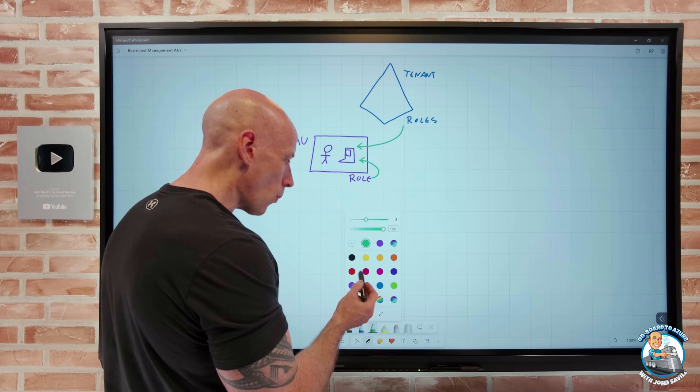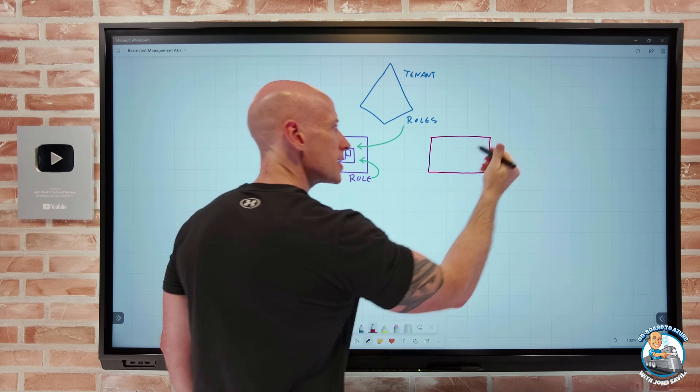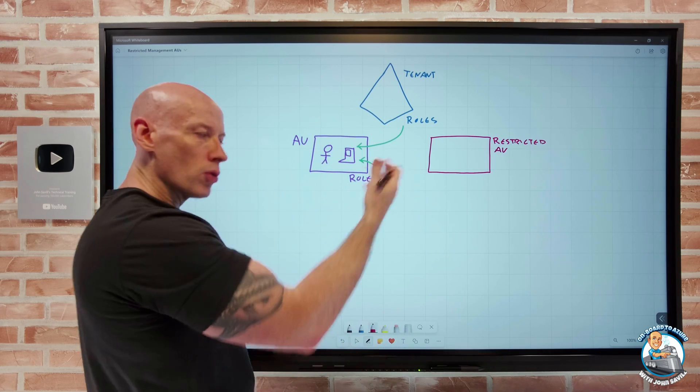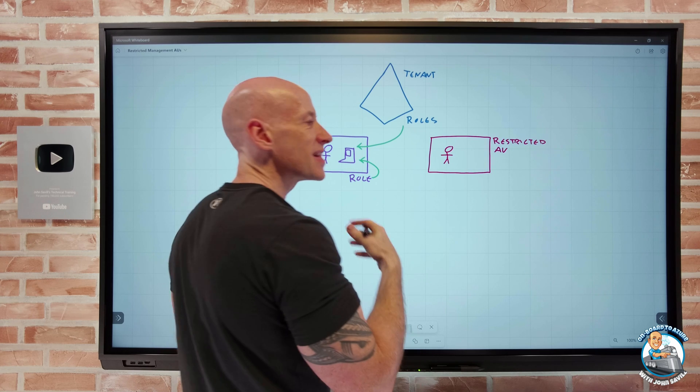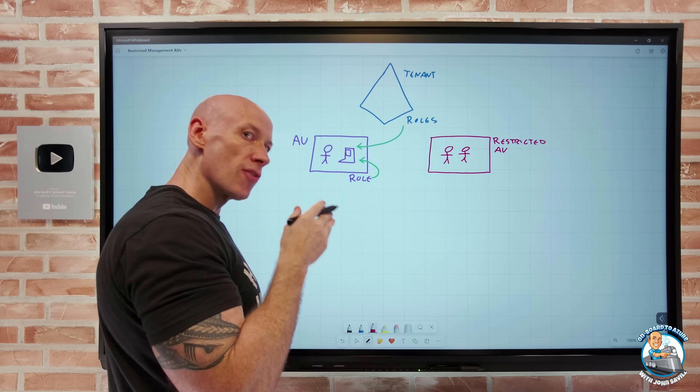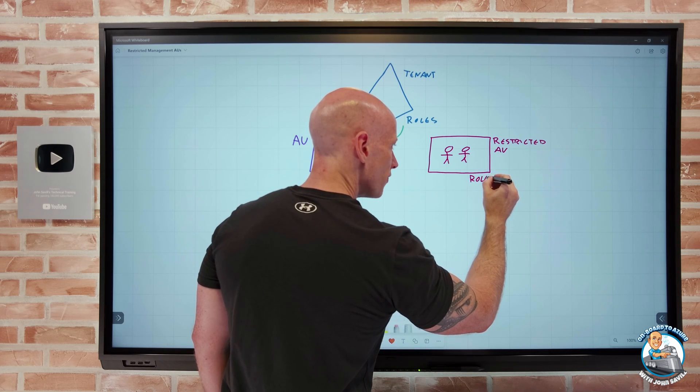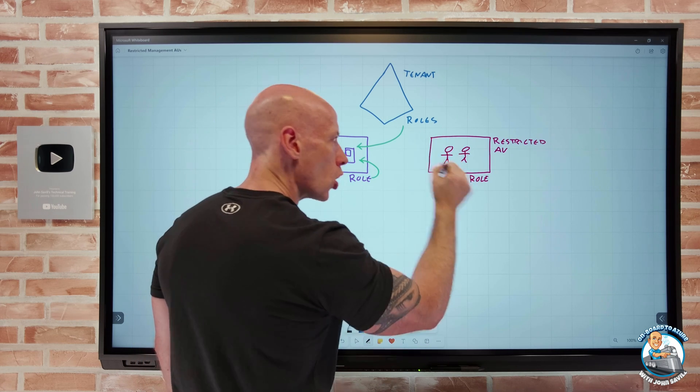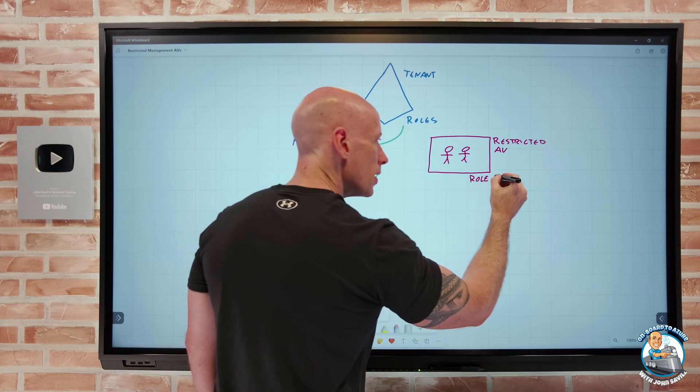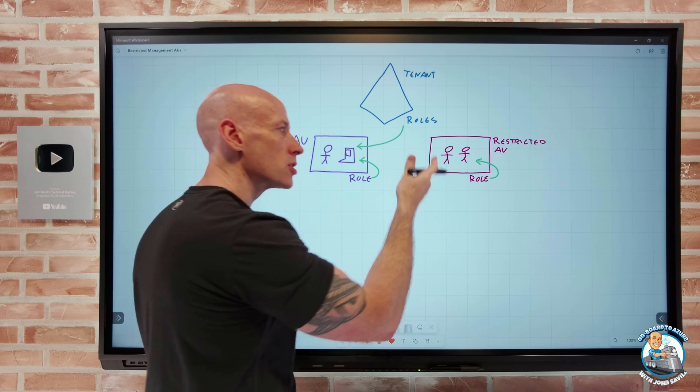And so what we now have the ability to do is when we create the administrative unit, what I can specify is it's this restricted management administrative unit. And once again I would put the objects inside. So let's say I put my, in this case maybe my executive users into this restricted administrative unit and I set that restricted management flag at time of creation. And just like before, I now configure roles. So once again I would configure particular roles, and remember this role is at the scope of this administrative unit. So now what happens is, well this role, whatever it is at this scope, the people who have that role, they have the ability to perform that role's capabilities, its operations on the objects inside.